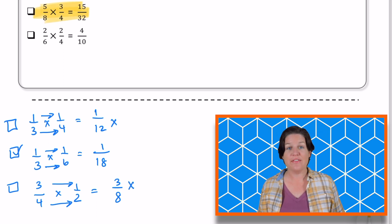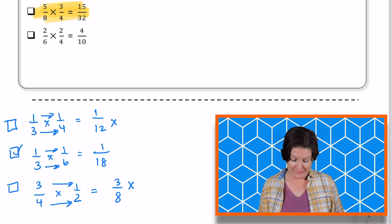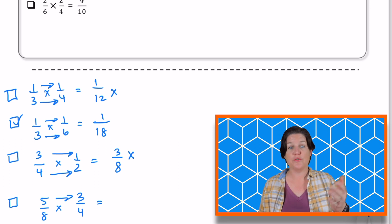Next up, we've got five eighths times three fourths. Is that 15 thirty-seconds? I think that's how you would say that denominator. Five eighths times three fourths. Five times three equals what? 15.